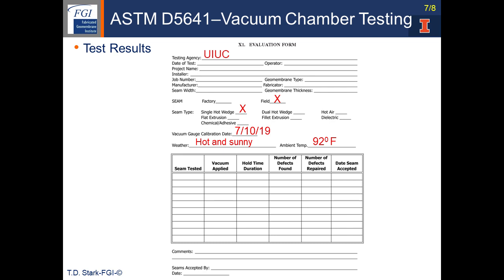Each time the vacuum chamber test is performed, it's listed: the seam tested, the number of the seam, the vacuum applied, the hold time over the seam, the number of defects found, the number of defects repaired, and that eventually the seam is accepted and the date of acceptance in the last column. Any other comments can be added to that data sheet.